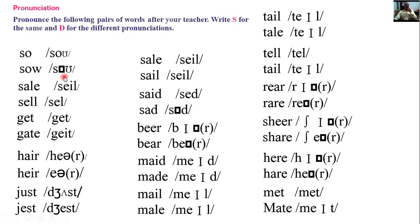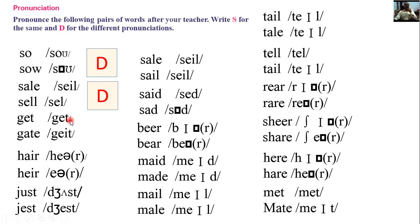Show and show — same. Shell and shell — same. Get and get — different. Here and here — different. Just and just — different. Shell and shell — same. Said and sad — different. Here and beer — different.